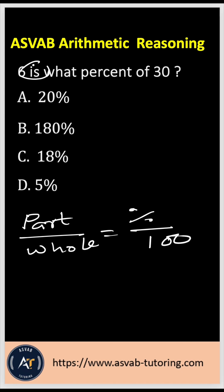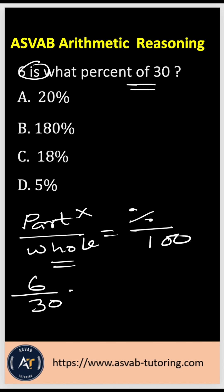"Is" means part, and "of" means whole. So plug in the values: 6 over 30 equals x over 100, where x represents the percent.